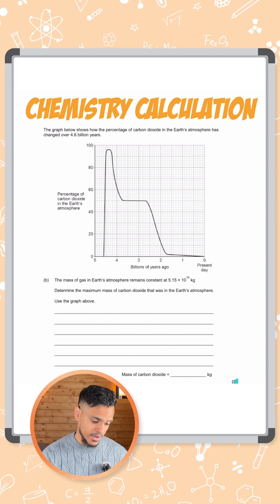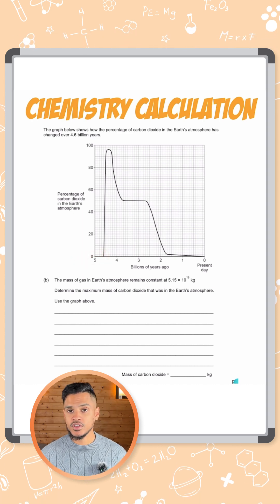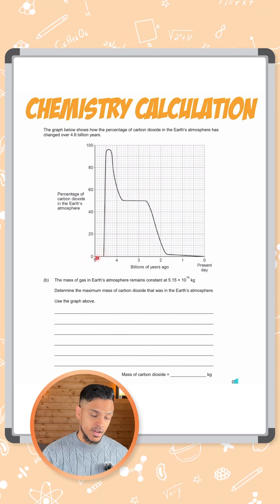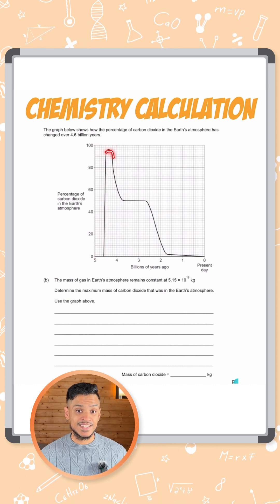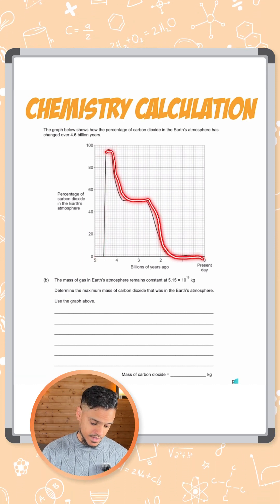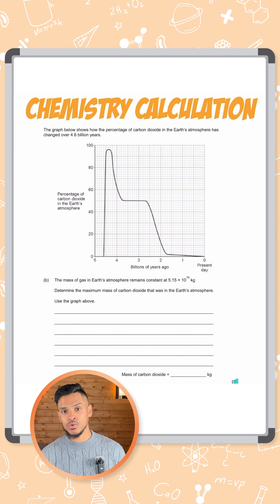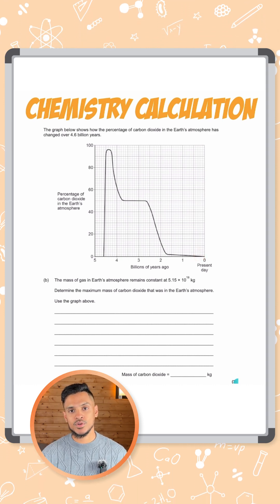You can see here 4.6 billion years ago when the Earth was formed, carbon dioxide was very high, and then over the next few billion years it decreased significantly and we ended up with pretty much almost zero right now, 0.04 percent.